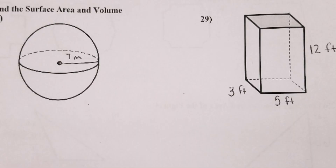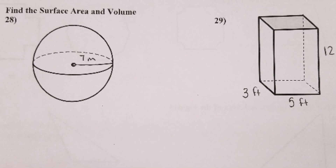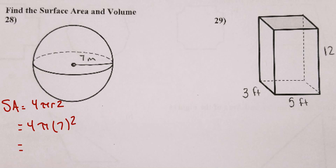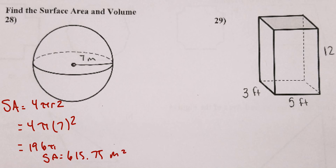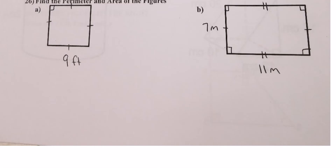Number 28 is a sphere. Surface area = 4πr². So surface area = 4 × π × 7² = 4 × π × 49 = 196π ≈ 615.75 square meters. For volume, it's (4/3)πr³. If you're not sure where these formulas come from, check the hint page — the formulas for a sphere are listed there.